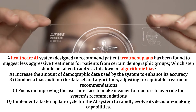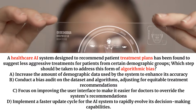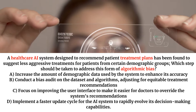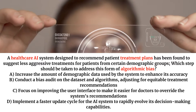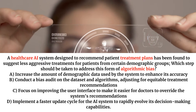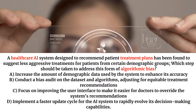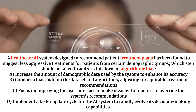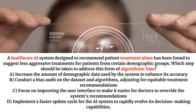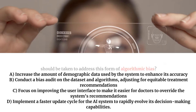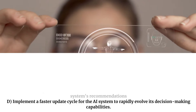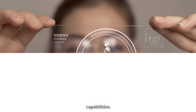A. Increase the amount of demographic data used by the system to enhance its accuracy. B. Conduct a bias audit on the dataset and algorithms, adjusting for equitable treatment recommendations. C. Focus on improving the user interface to make it easier for doctors to override the system's recommendations. D. Implement a faster update cycle for the AI system to rapidly evolve its decision-making capabilities.